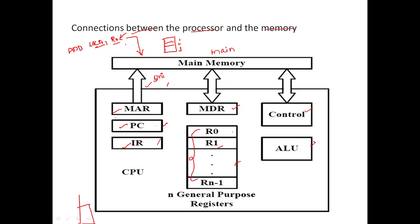Execution begins when the Program Counter is set to the first instruction. It should not point to the fifth or sixth instruction — it must point to the first instruction for execution to start. Once the PC points to the first instruction, execution begins. The contents of the PC are then transferred to the Memory Address Register.